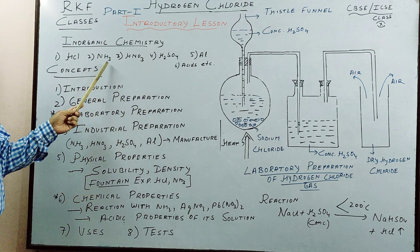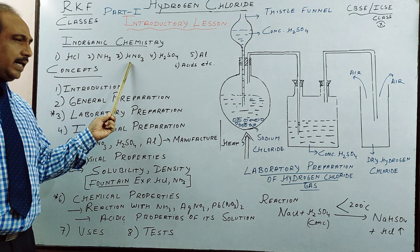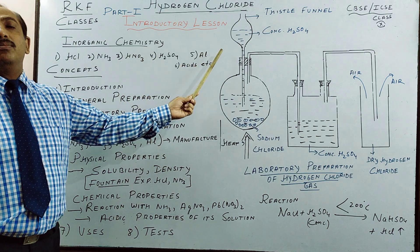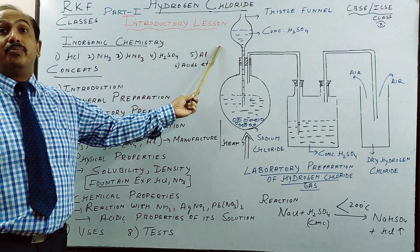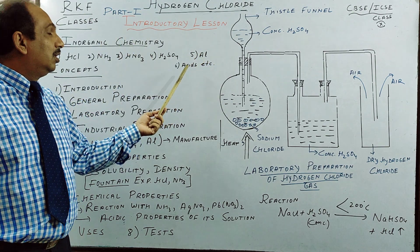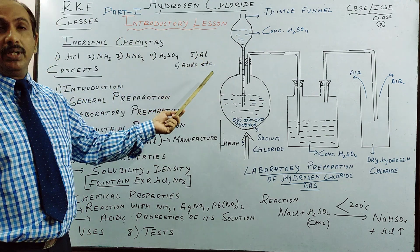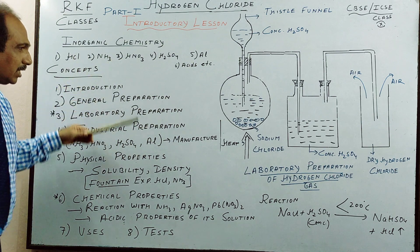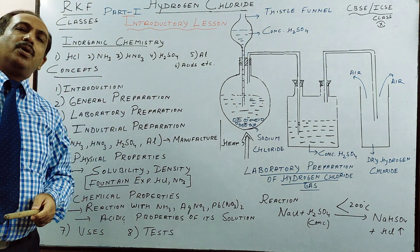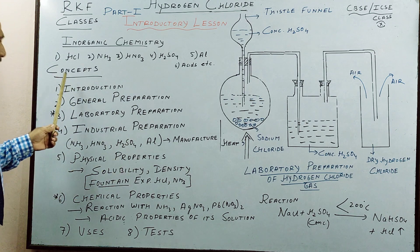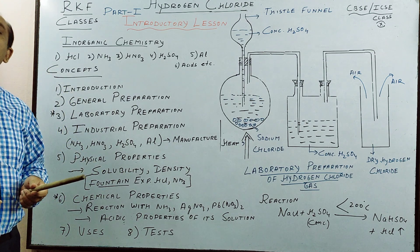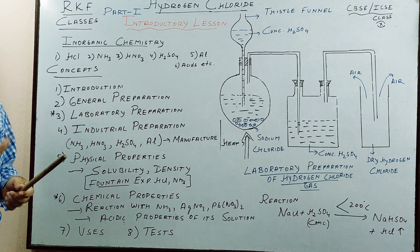This format we will follow for all 5 to 6 chapters. For HCl, this is the introductory lesson. We will follow the same format for ammonia, nitric acid, sulphuric acid, aluminium extraction — which is part of the metallurgy chapter — electrolysis, and acid bases and salt. This is our general pattern whenever you study these chapters from inorganic chemistry. First thing we see is introduction.